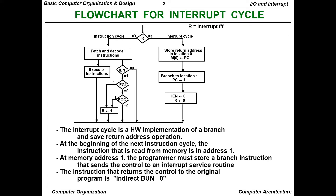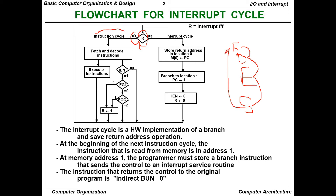This is the flowchart for the interrupt cycle. R is the interrupt flip-flop that decides whether to follow an instruction cycle or interrupt cycle. When R equals 0, we go to instruction cycle, which contains fetch, decode, execute, and store — a cyclic process.